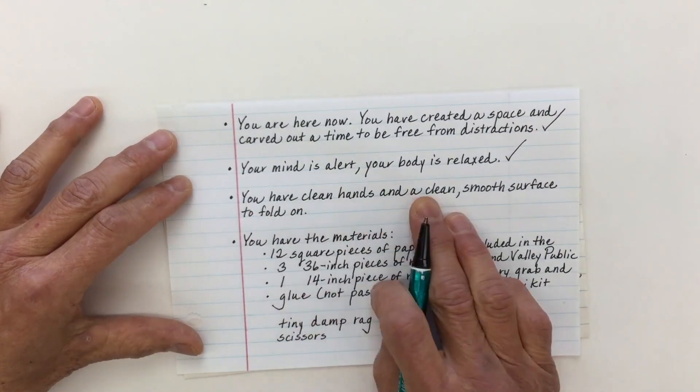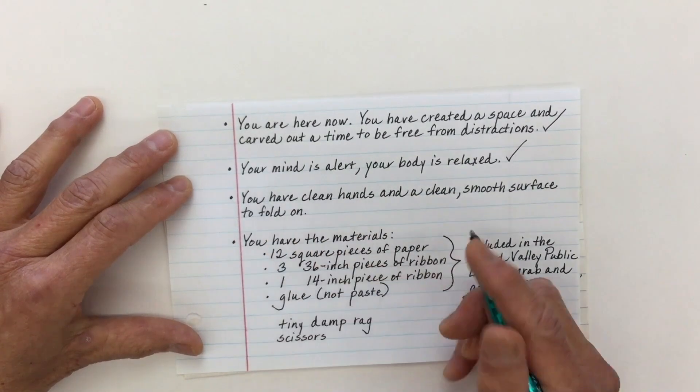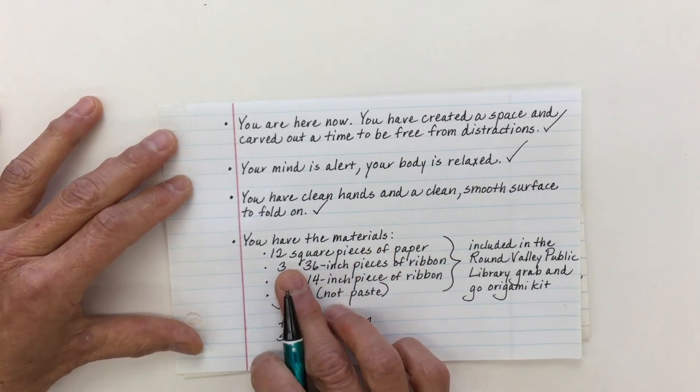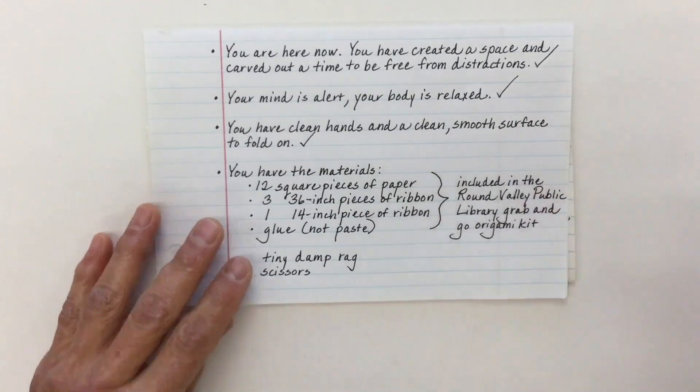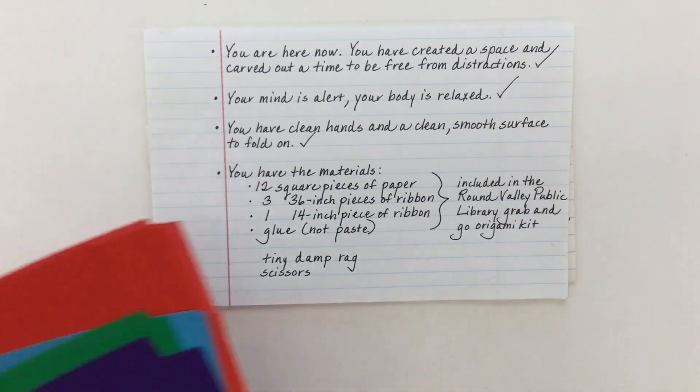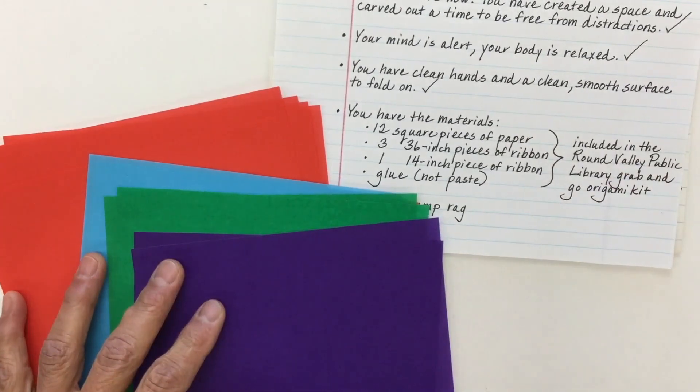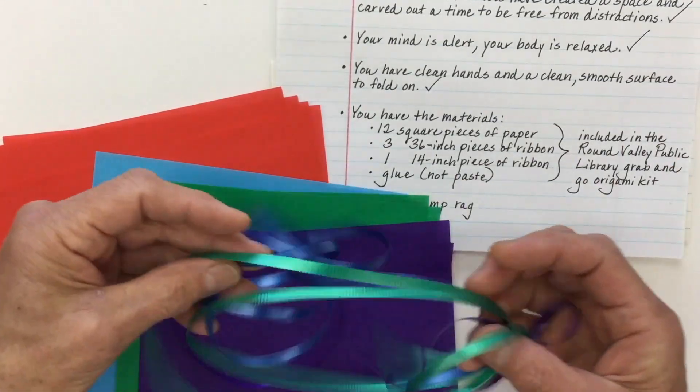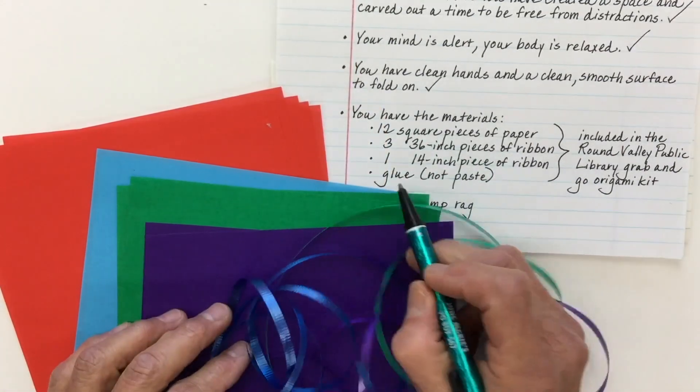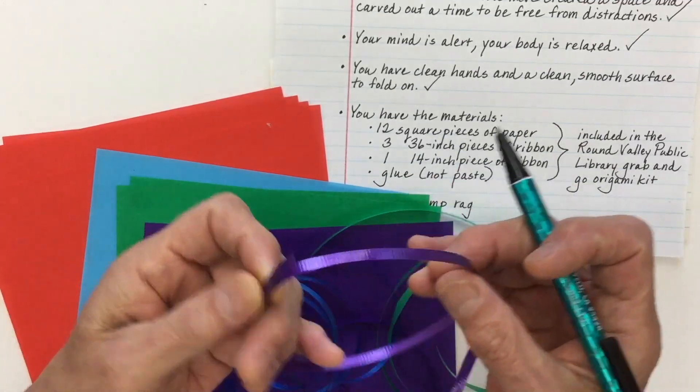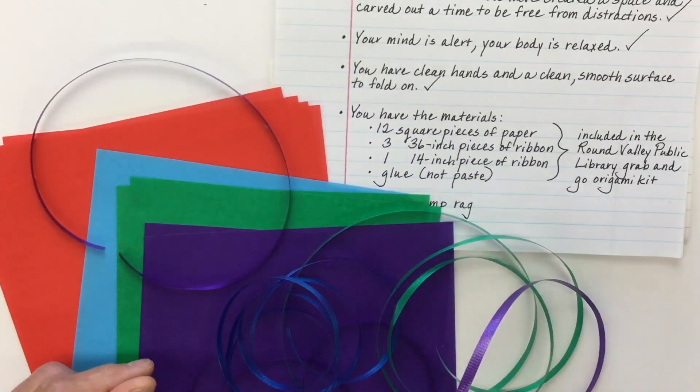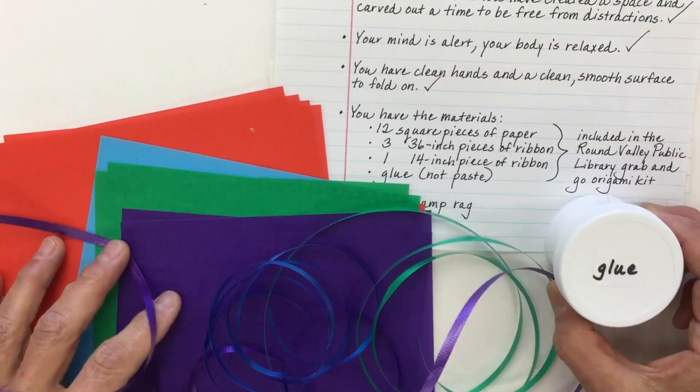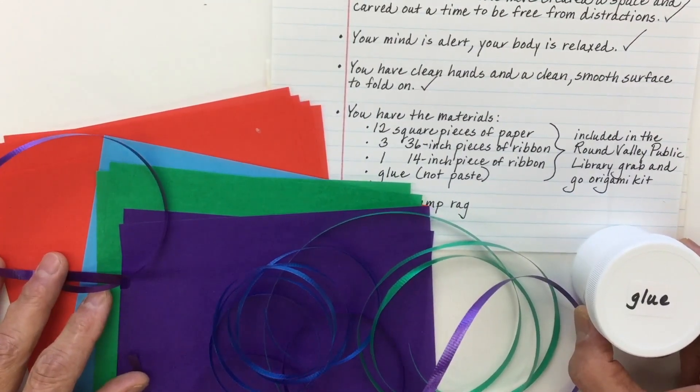You have clean hands and a clean, smooth surface to fold on. You have the materials. Twelve square pieces of paper, three 36-inch pieces of ribbon, one 14-inch piece of ribbon, and glue, not paste.